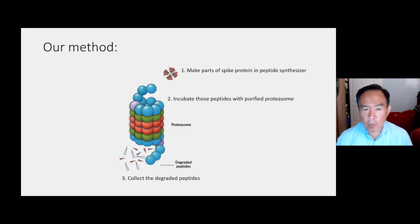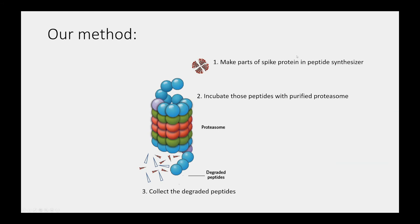So what is our method for isolating these key parts? Well, we make key parts of the infamous spike protein in a peptide synthesizer. We then incubate those parts of the spike protein with purified proteasome. So this is all happening in a test tube. Now, the proteasome does its job and releases many, many small peptides in the test tube. And we collect those degraded peptides.